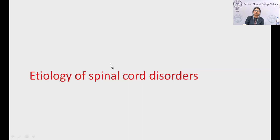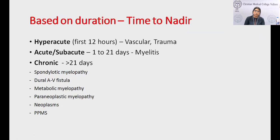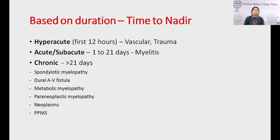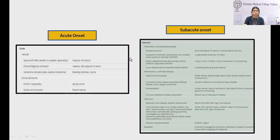For determining the etiology of spinal cord disorders, duration from onset to maximum neurological deficit is critical. Hyperacute onset within the first 12 hours suggests vascular involvement or trauma. Acute to subacute (1–21 days) suggests myelitis — idiopathic transverse myelitis, primary demyelinating disorders, or secondary autoimmune disorders affecting the cord. Chronic (more than 21 days) suggests structural causes, nutritional, toxic, paraneoplastic, neoplasm, or primary progressive multiple sclerosis.